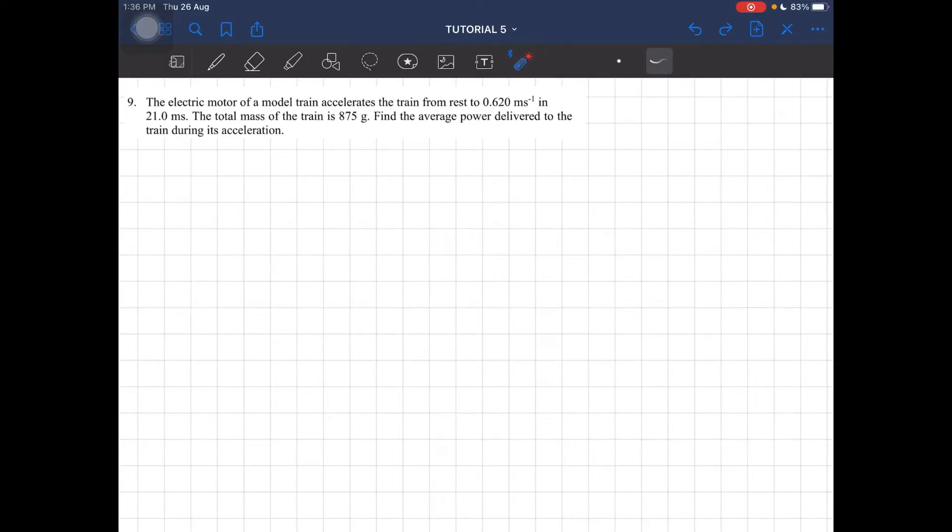Okay, question nine. The electric motor of a model train accelerates the train from rest to 0.62 meters per second in 21 milliseconds.